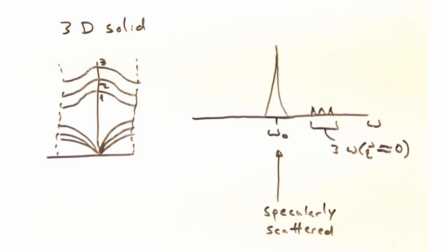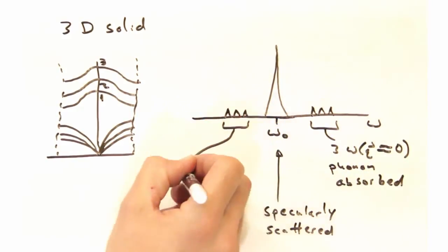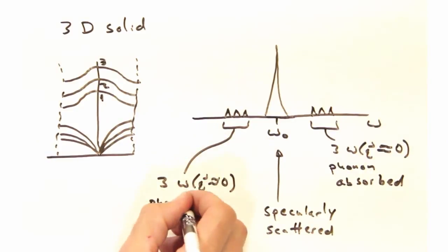Then at slightly higher energies, I'm going to see three peaks associated with these three optical modes due to phonons being absorbed by the light and gaining that energy. On the other side, I'm going to see those three peaks mirrored about frequency 0 due to that light creating phonons.